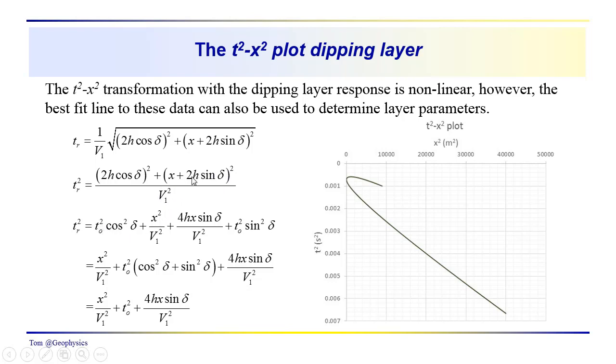This 2H over V1 is T0. When we square this, we have T0 cosine squared delta, we have 4Hx sine delta over V1 squared, and we also have T0 sine squared delta.